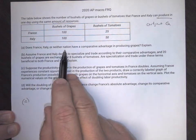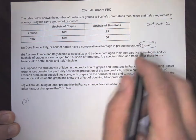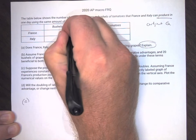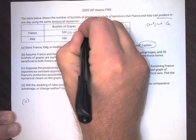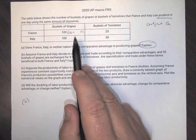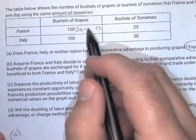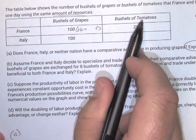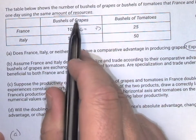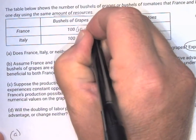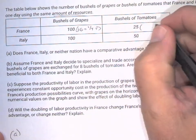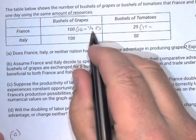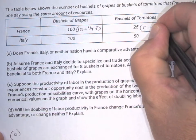Question A: Does France, Italy, or neither nation have a comparative advantage in producing grapes? There's that key word — explain — so that means more points. Now, what does one grape equal in terms of tomatoes? So, grapes is what I'm solving for, the other goes over. For France: 25 over 100 gives us one-fourth of a tomato. And the reciprocal — what does it cost France to make one tomato — is four grapes.